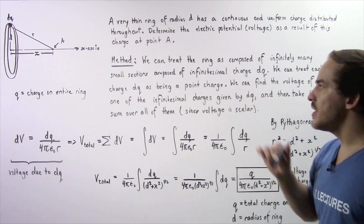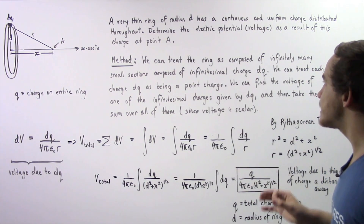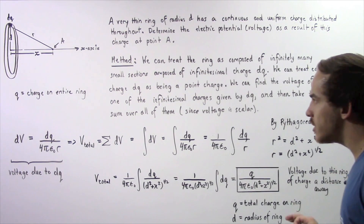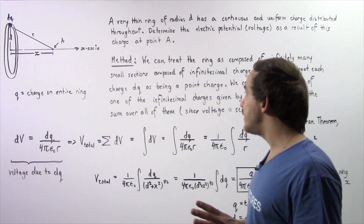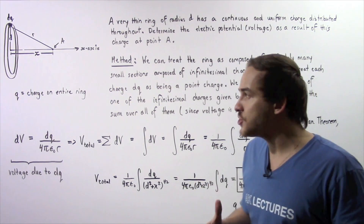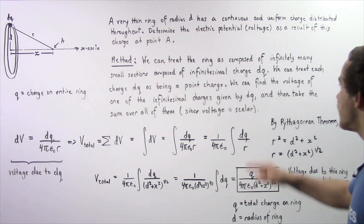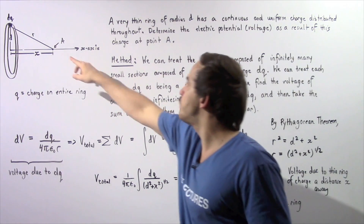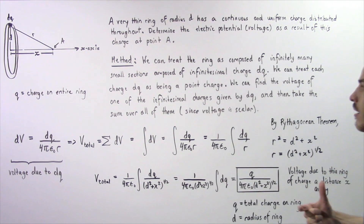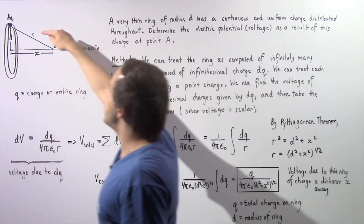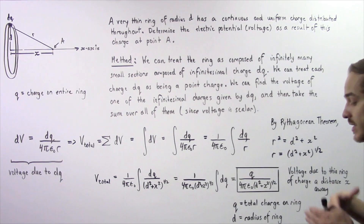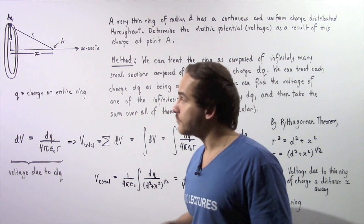The method is as follows: we treat the ring as composed of infinitely many small sections, each with infinitely small charge dq. We treat each one of these charges dq as a point charge, and then we find the voltage due to one of these infinitely small charges at point A. We then take the sum over all charges dq around the entire ring, because voltage is a scalar and we can simply take the algebraic sum.